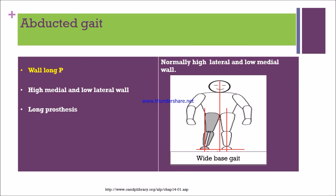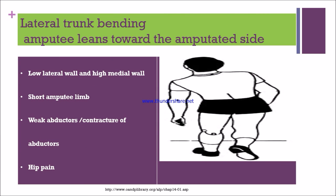Next is lateral trunk bending transfemoral gait deviation. In this deviation, the amputee leans toward the amputated side. The patient has a low lateral wall and high medial wall — opposite of normal. If the amputee limb is short, the patient will again lean toward the amputated side. If there is weakness of hip abductors or abductor contracture, the patient will laterally bend their trunk.